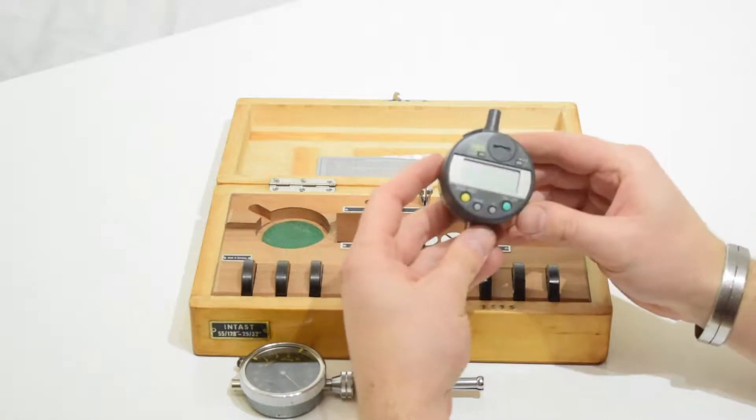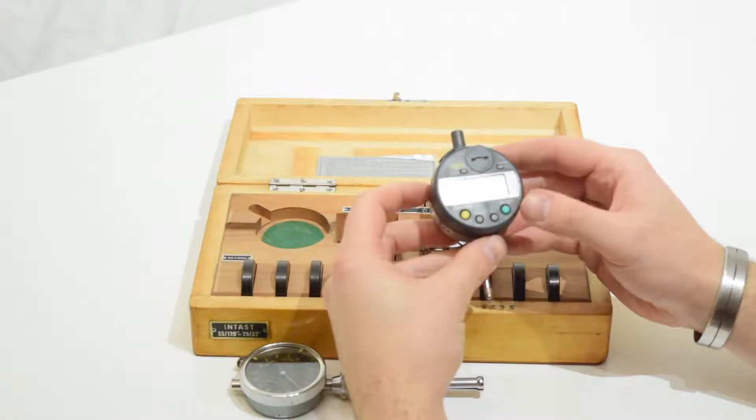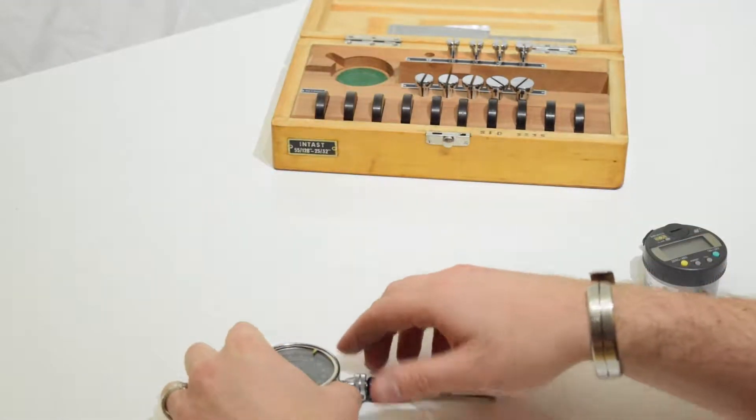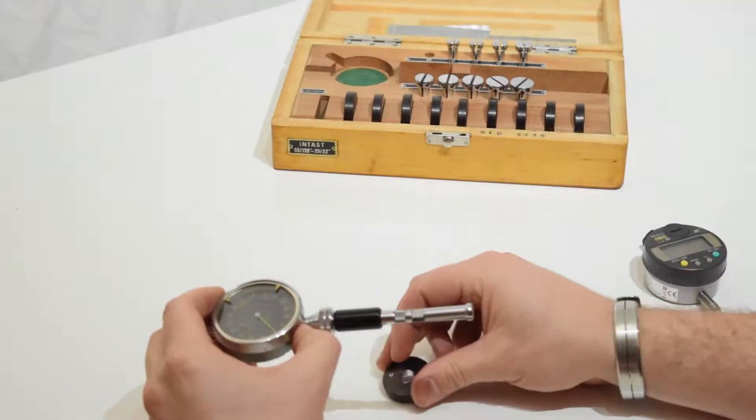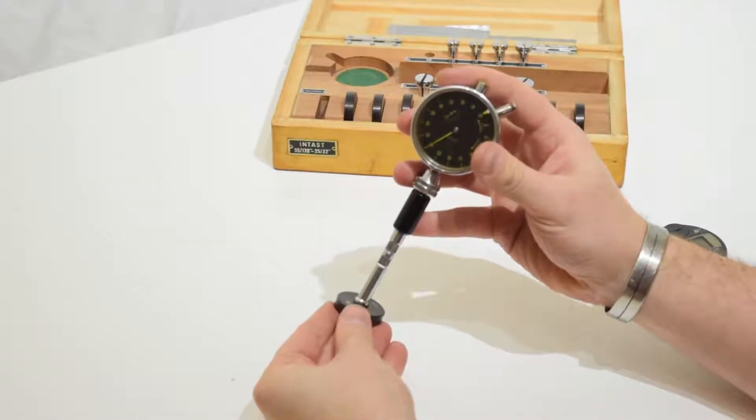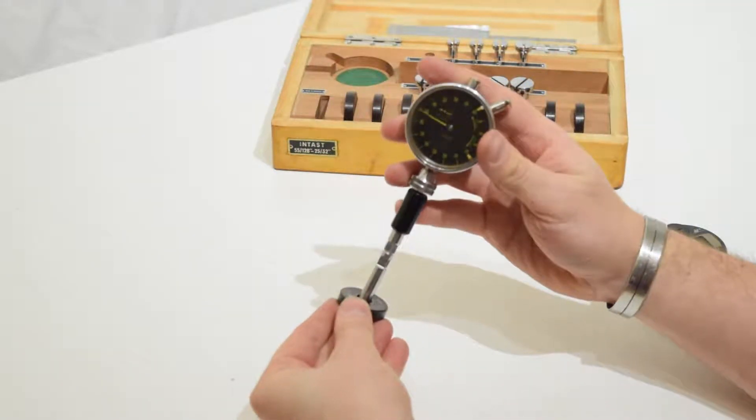I've also included a Mitsutoyo IDC Digimatic, so I can then convert imperial to metric measurements, and thus extending the range that this split ball gauge can have in today's machining.